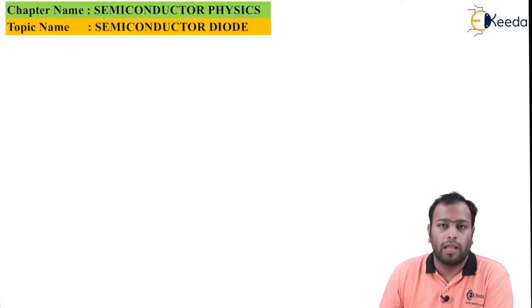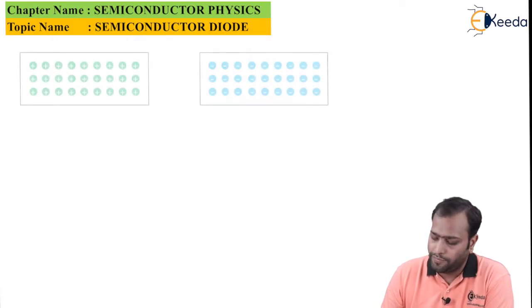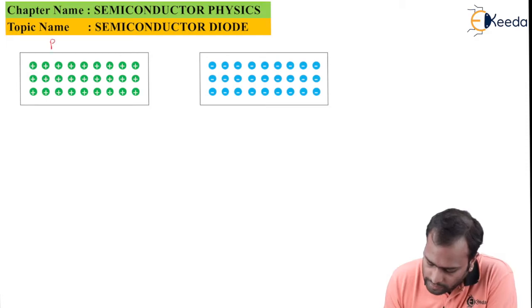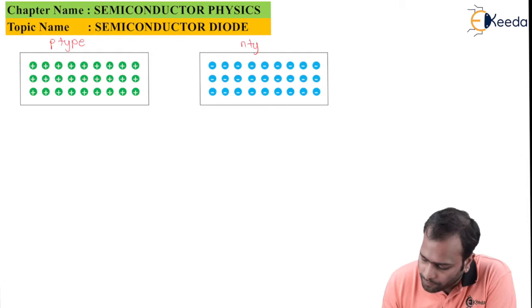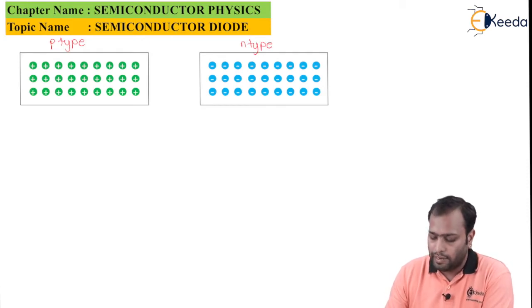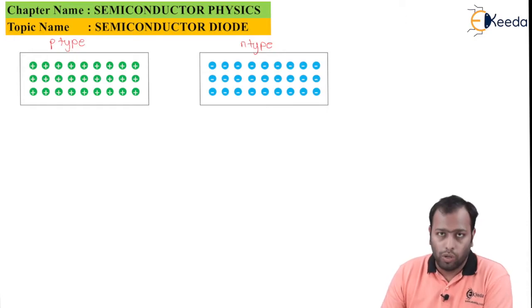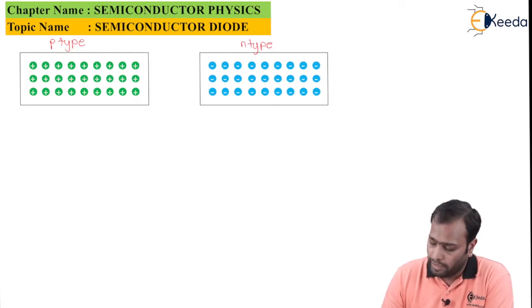Semiconductor diode. Now, die means two and ode means terminals, so semiconductor diode is a semiconductor device which is having two terminals. Now it is fabricated like this: here you can see we have P-type semiconductor, and here you have N-type semiconductor. Now how would you identify that? Well, in P-type semiconductor you can see you have positive charges or holes as majority carriers, and in N-type you have electrons as majority carriers.